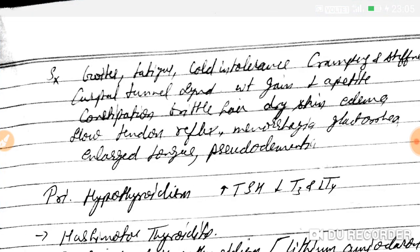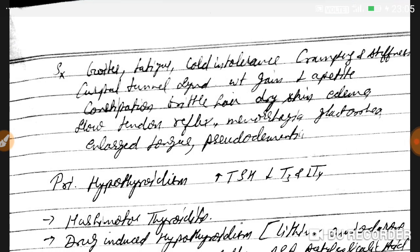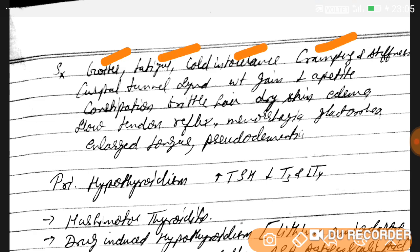Symptoms of hypothyroidism include goiter — enlargement of the thyroid gland — fatigue, cold intolerance, cramping, stiffness, carpal tunnel syndrome, weight gain, decreased appetite, constipation, brittle hair, dry skin, edema, slow tendon reflex, menorrhagia, galactorrhea, large tongue, and pseudodementia.